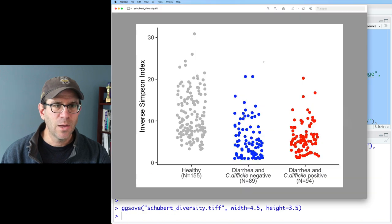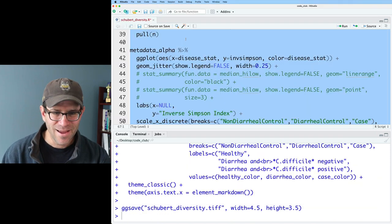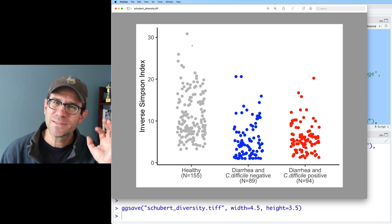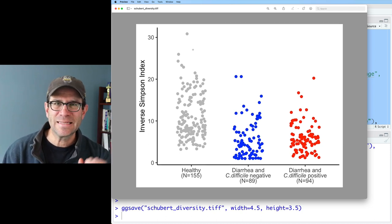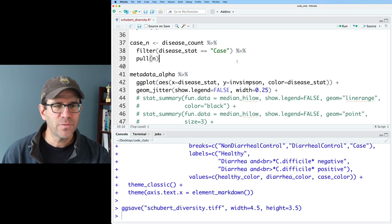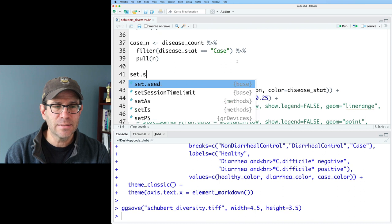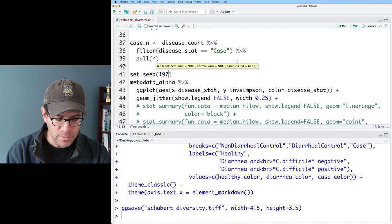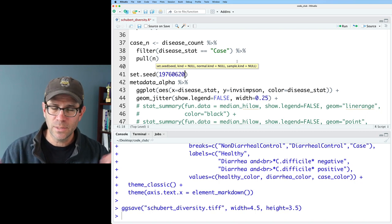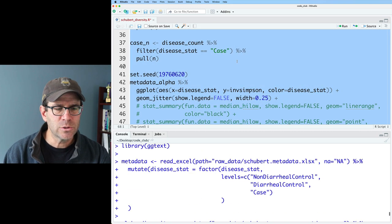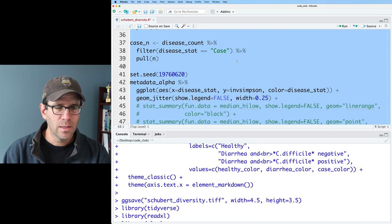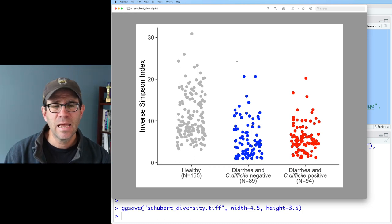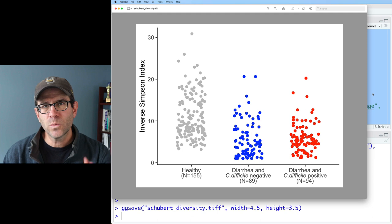One thing to note about this figure is that the x-axis position is determined by a random number generator, so running it multiple times will actually get a different plot each time. Perhaps we would like the points to not move, to stay still and be consistent. There's two ways to do this. The first is to use a function called set.seed and give it a number. I like to give it my birthdate, 19760620, June 20, 1976.